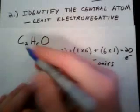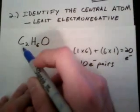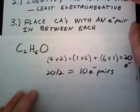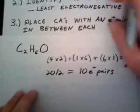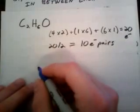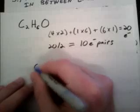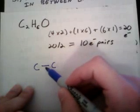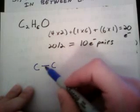So in that case, our central atom, we have two of them. Our central atoms are going to be the carbon atoms. The next step is to place the central atoms with an electron pair in between each. So if we do that, we're going to have a carbon bonded to a carbon. Because remember, this line represents two valence electrons. This is an electron pair.